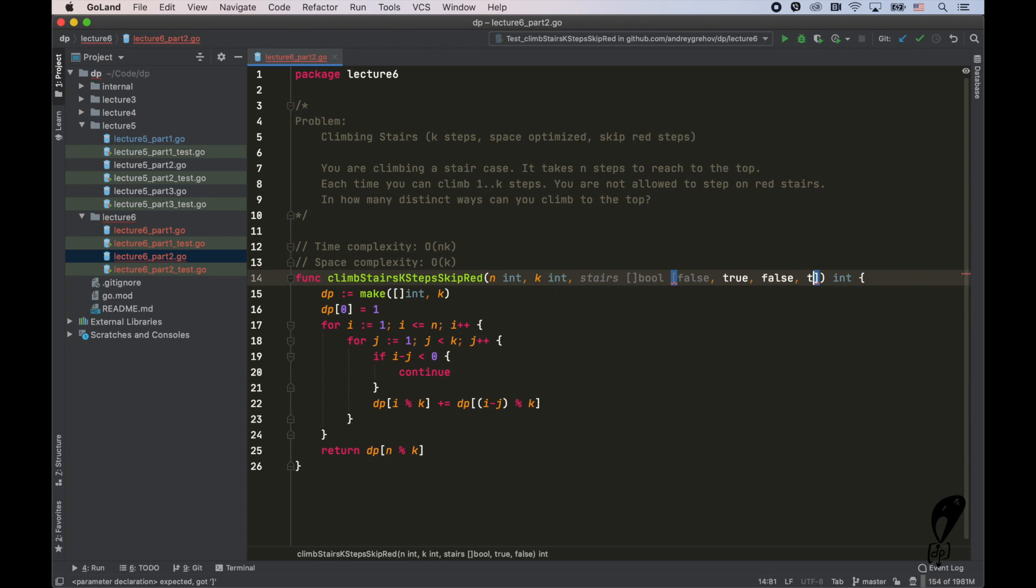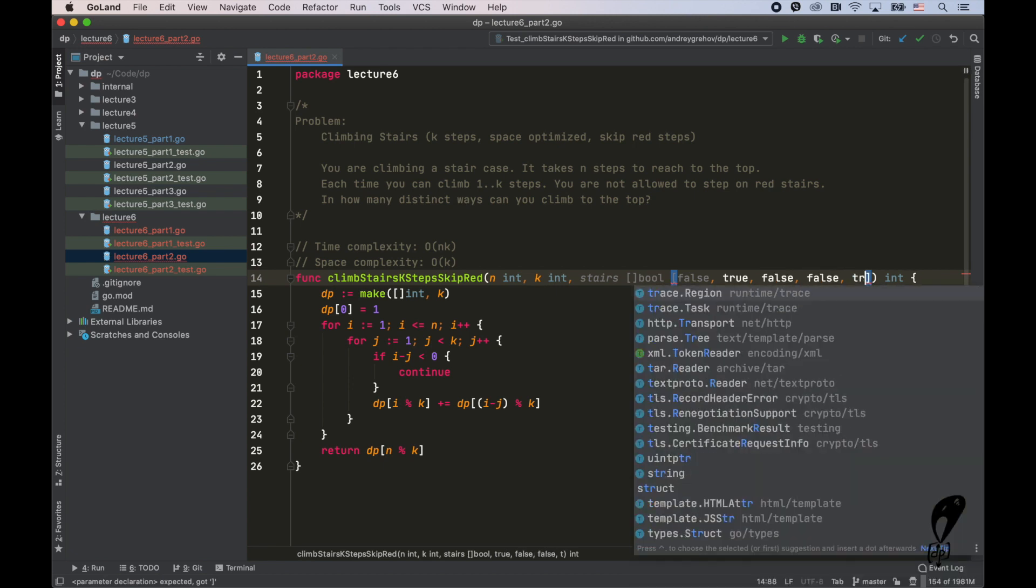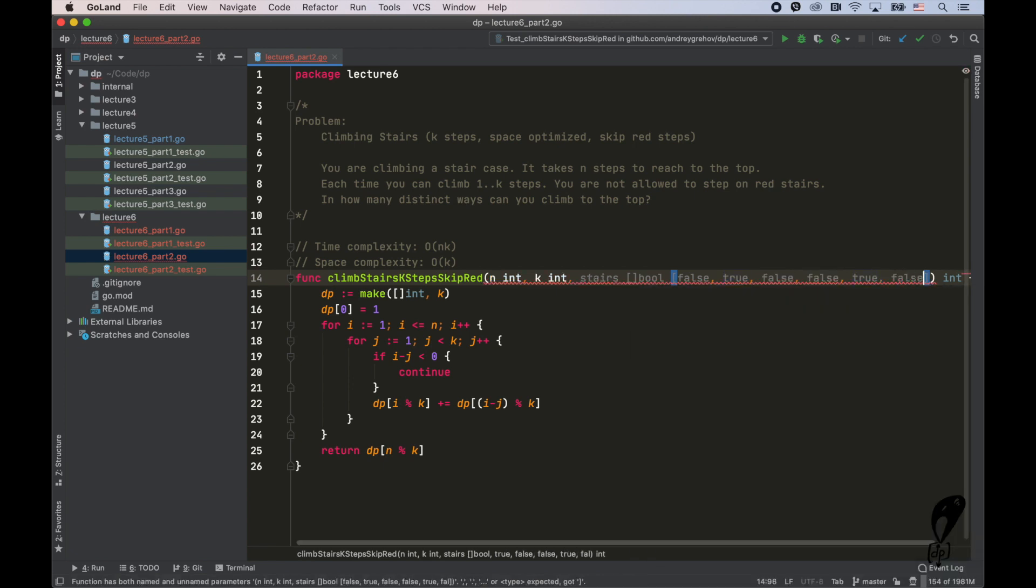So the values would look like false, true, false. Let's say false, true, false. So the first one is false. It's always false because we're on the ground and otherwise we would not be able to move forward. The first stair is red. The second is not red. Third is not red. Fifth is red. And so on.